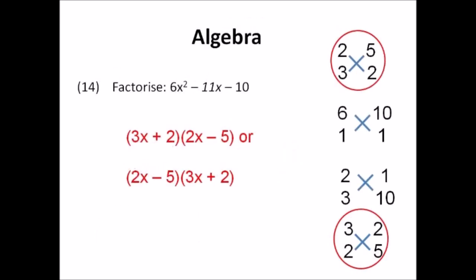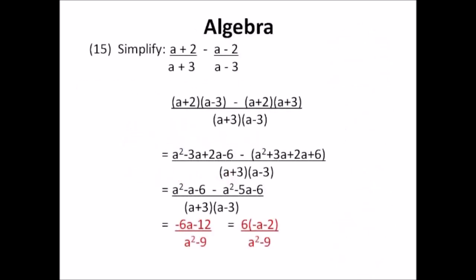Number fourteen: factorizing 6x² minus 11x minus 10 gives (3x + 2)(2x - 5) or equivalently (2x - 5)(3x + 2). The terms must add to give negative 11 in the middle and multiply to give negative 10 — fix the signs carefully. Number fifteen: simplifying the algebraic fraction gives negative 6a minus 12 over a² minus 9, which can also be written as 6(negative a minus 2) over (a+3)(a-3). Both forms are correct.